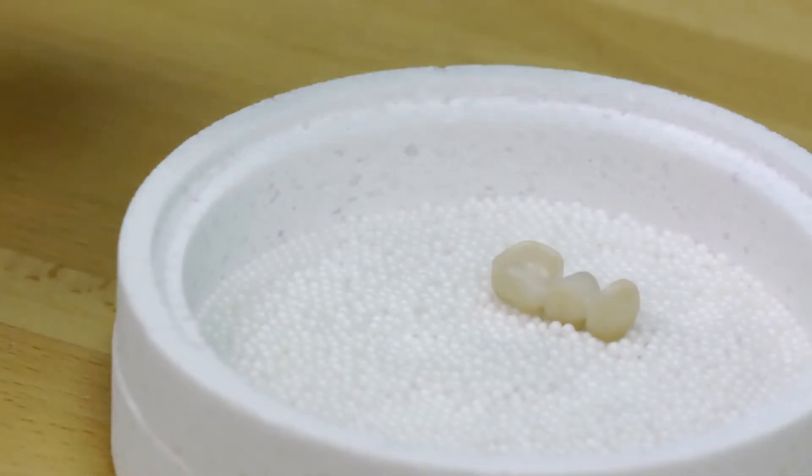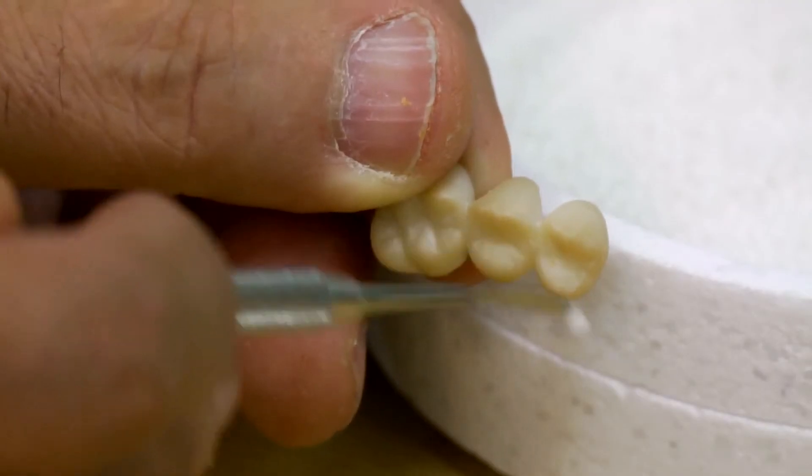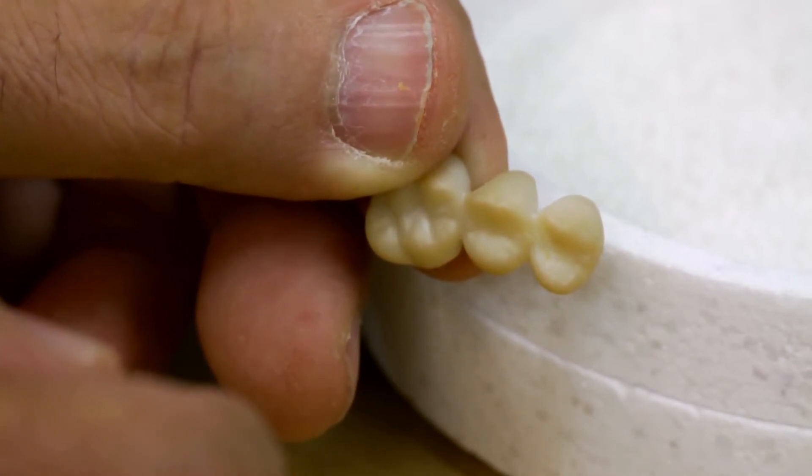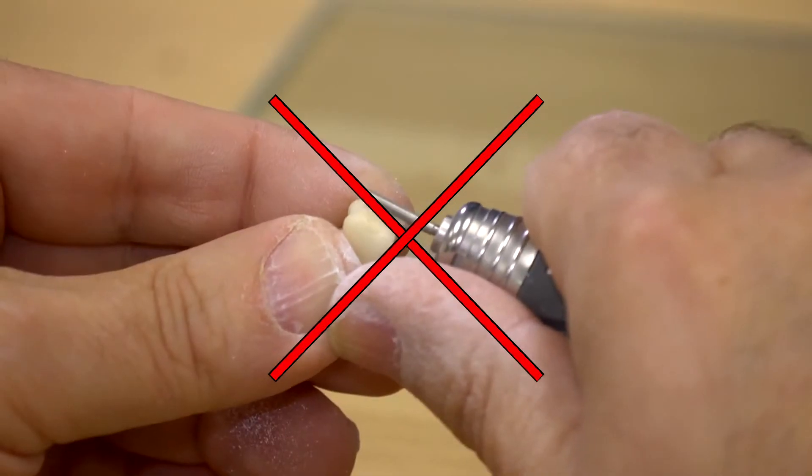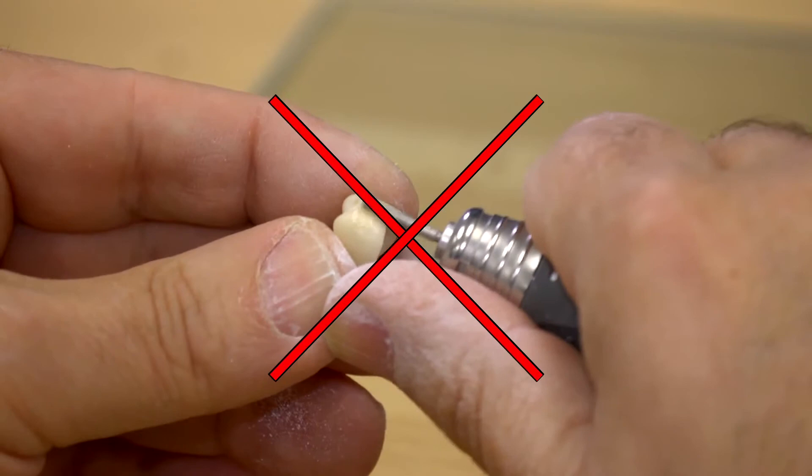Sintering beads that adhere are to be removed carefully. After the sintering process, the restorations must be cooled down to room temperature at atmosphere before further processing. Avoid making adjustments to the restoration after sintering as this may compromise the integrity of the restoration.